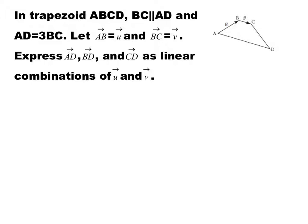In the next example, we have a trapezoid ABCD with BC parallel to AD, and AD equals 3BC. So the magnitude of AD is 3 times BC. If AB is 3u and BC is v, we have to express AD, BD, and CD as linear combinations of u and v. For the first one, AD: we can use the fact that AD is 3BC, and BC is given to be v, so AD is 3v.